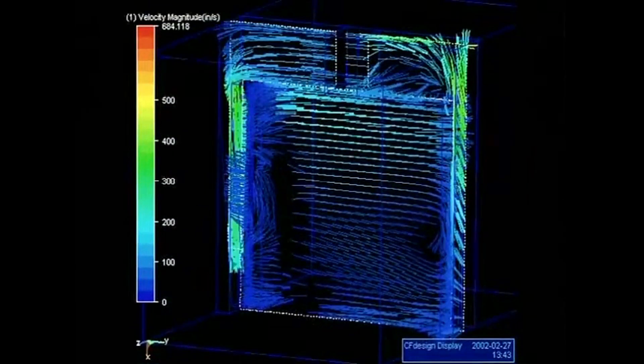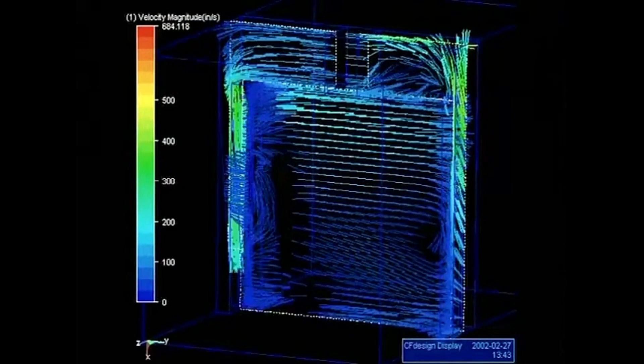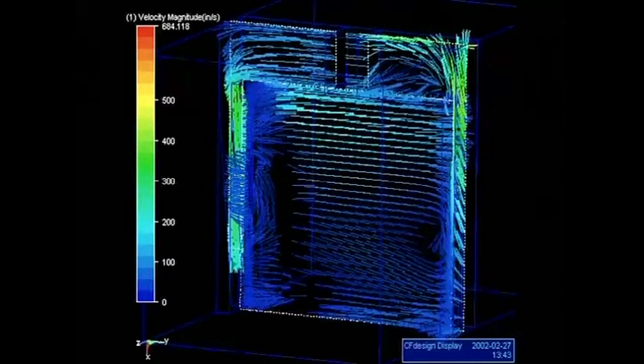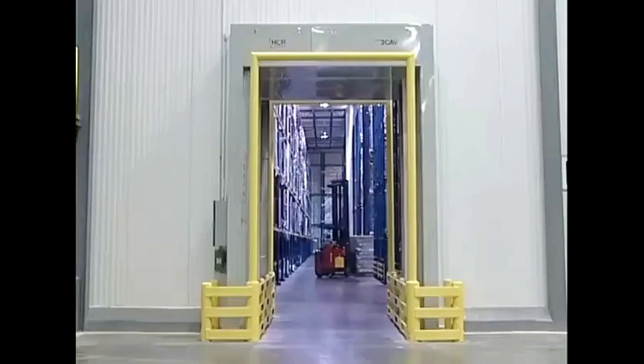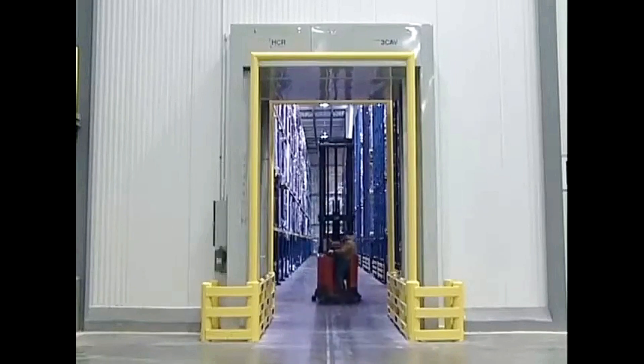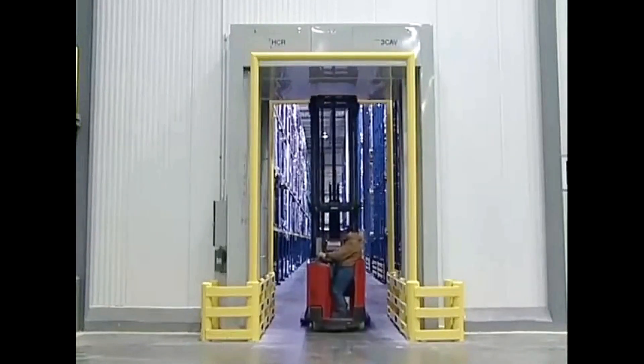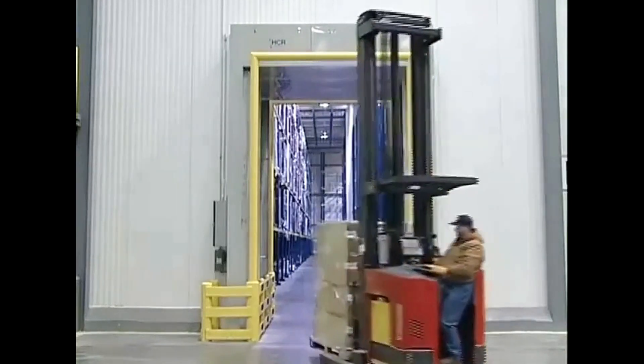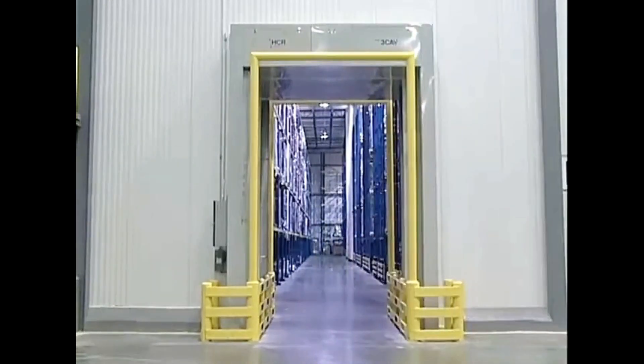The CFD software also shows us how the air inside the vestibule is captured and recirculated, as it is treated to a non-frost, non-fog state. When a forklift or material handling equipment moves through an HCR unit, the air curtain experiences minimal disruption. The air curtain is re-established immediately after a pass-through.